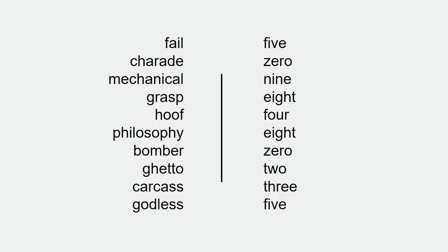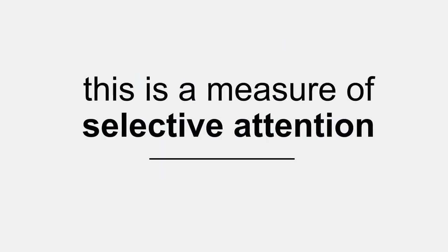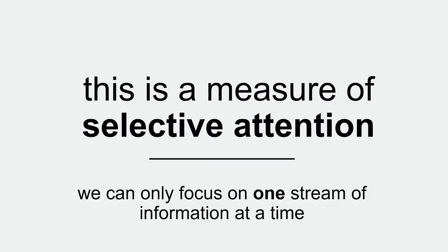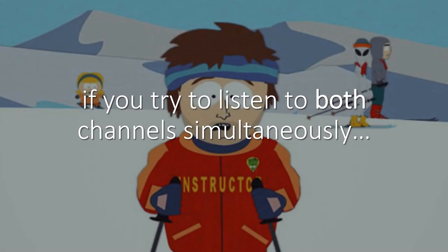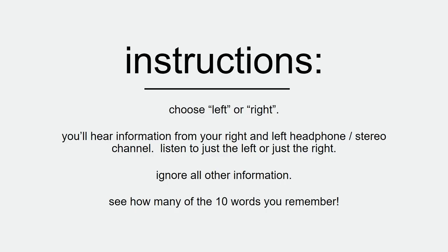Those are the 10 — kind of hard, right? What you'll find is that this is a measure of selective attention. Basically, you're able to focus on one stream of information, but only one at a time. Even though you had competing sounds, you were probably really good at getting one channel but not both. If you try to listen to both at the same time, you'll find it's very, very difficult.